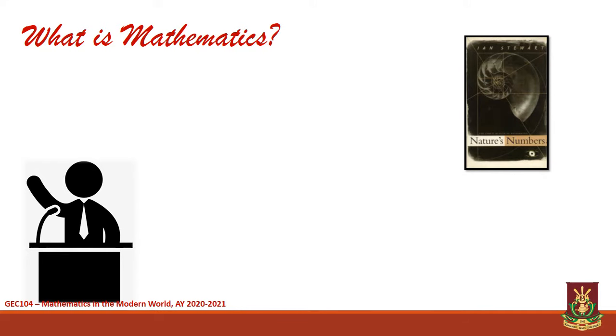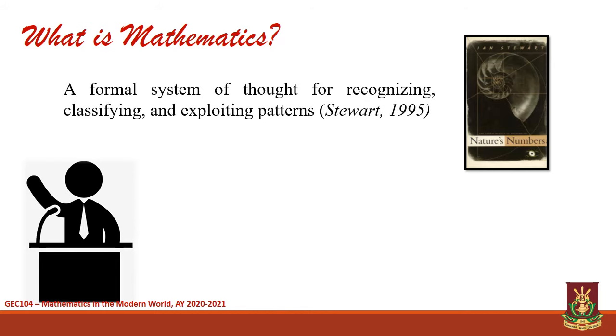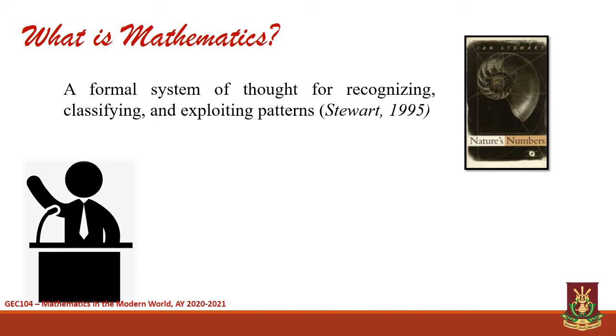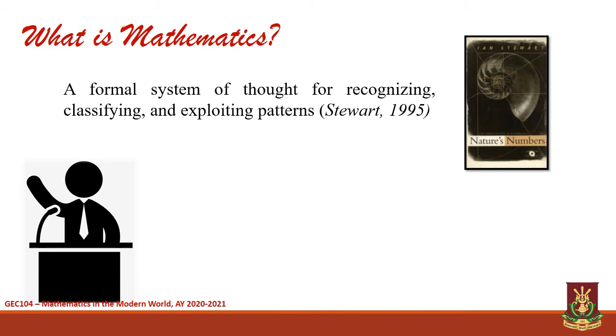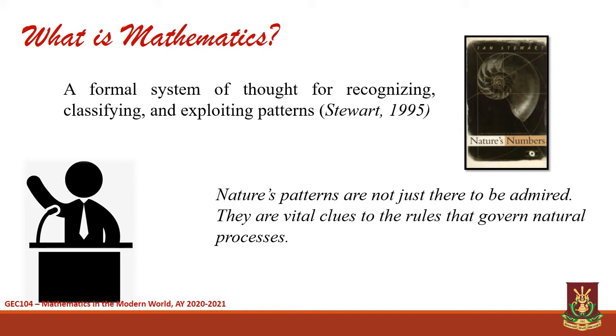Aside from this, British mathematician and writer Ian Nicholas Stewart defines mathematics in his book Nature's Numbers, the Unreal Reality of Mathematical Imagination, as a formal system of thought for recognizing and exploiting patterns. Combining these ideas led us to believe that nature's patterns are not just there to be admired. They are vital clues to the rules that govern natural processes.